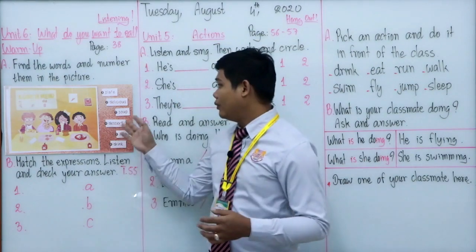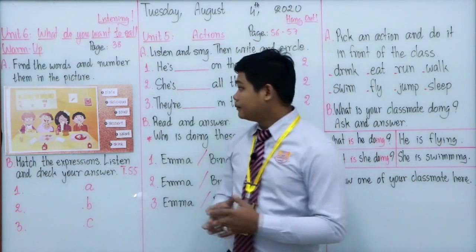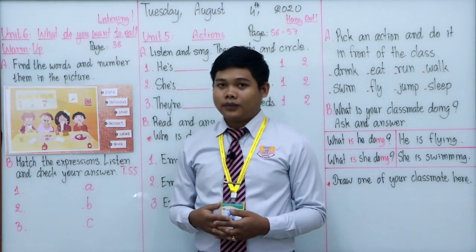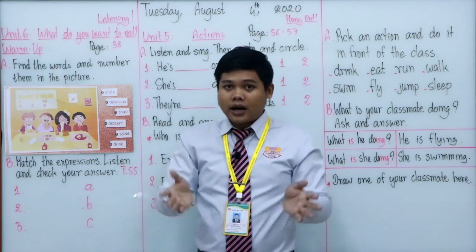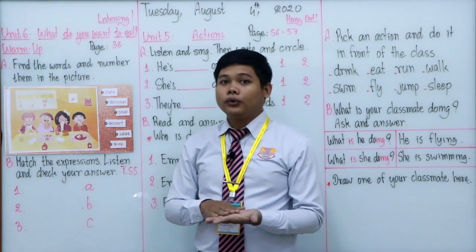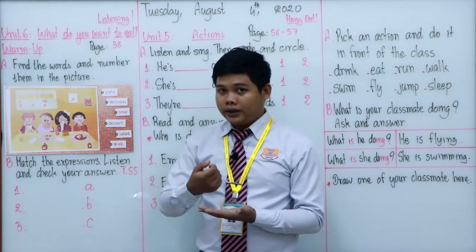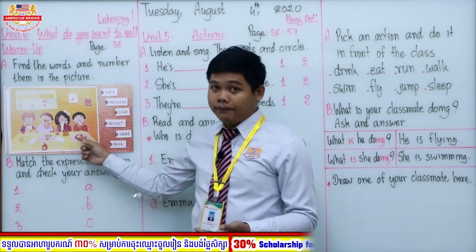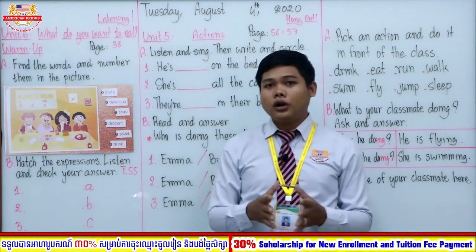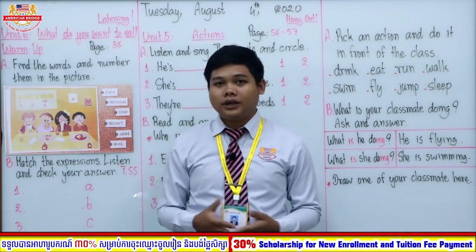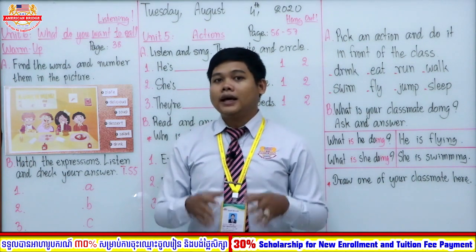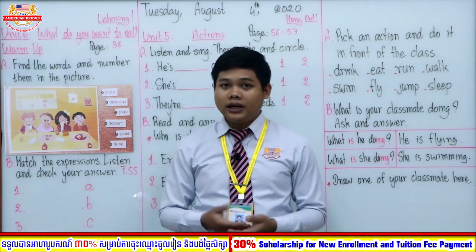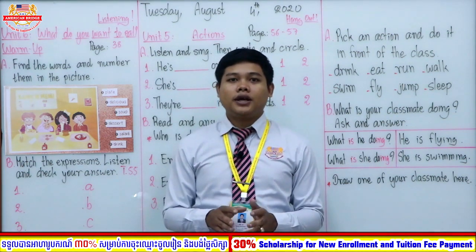Now let's move to our new vocabulary in Unit 6. The first word is plate — it is a kind of round dish that we put food on for you to eat. The second word is delicious — it means something tastes very, very good. For example, the pizza is so delicious.